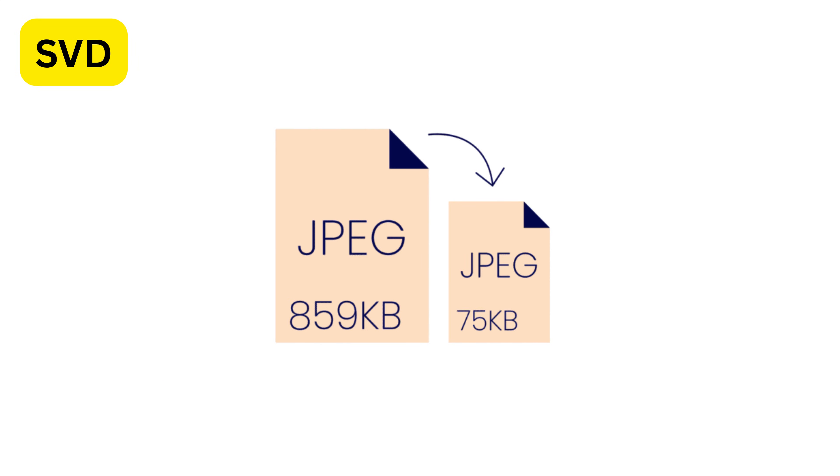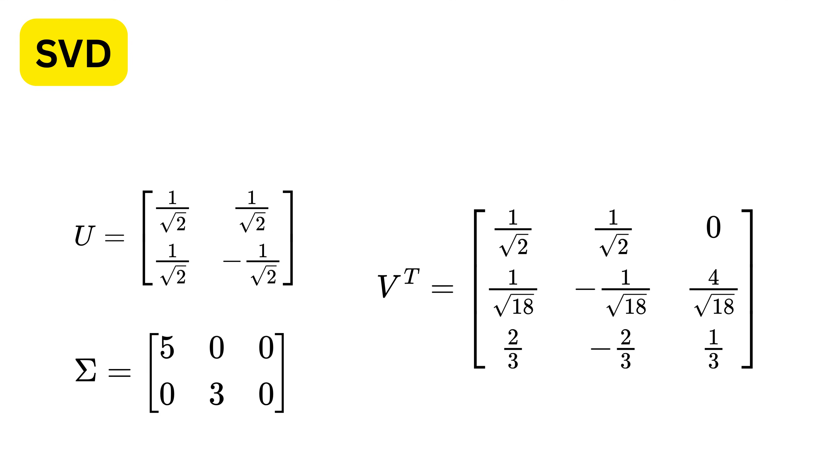SVD is used for image compression and denoising. It helps in reducing the dimensionality of image data by preserving the most significant singular values and discarding the rest. For example, look at the U, sigma, and V matrices for this 2 by 3A.